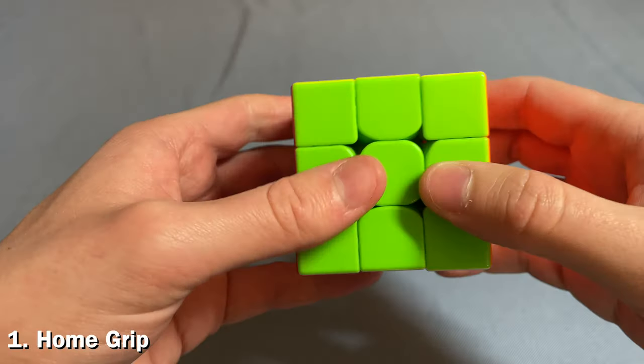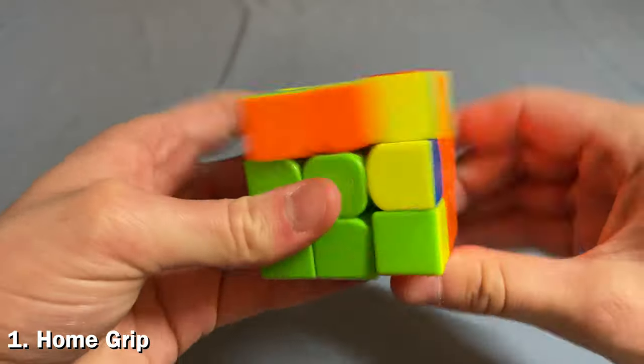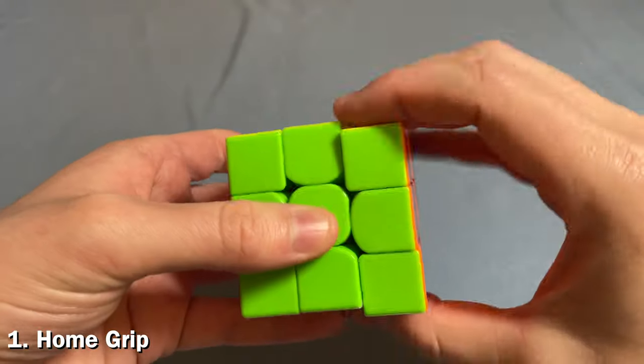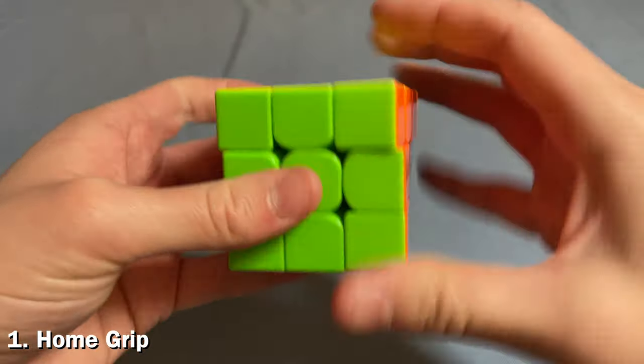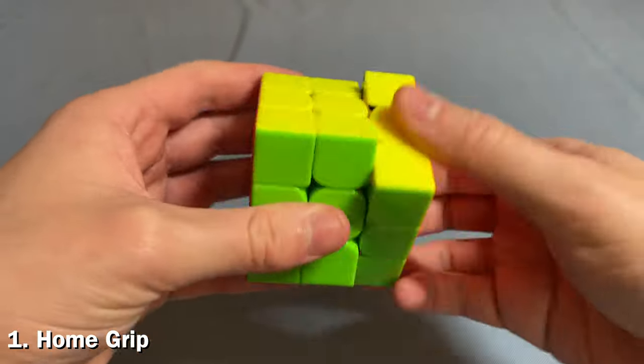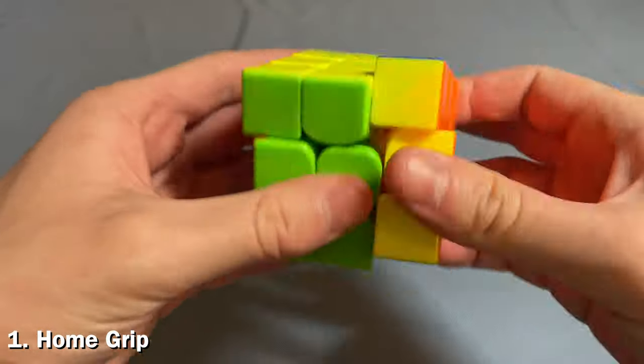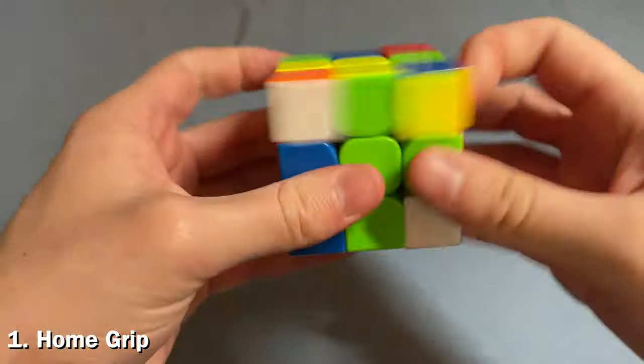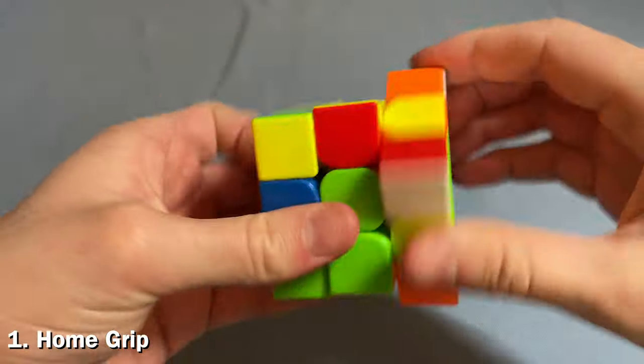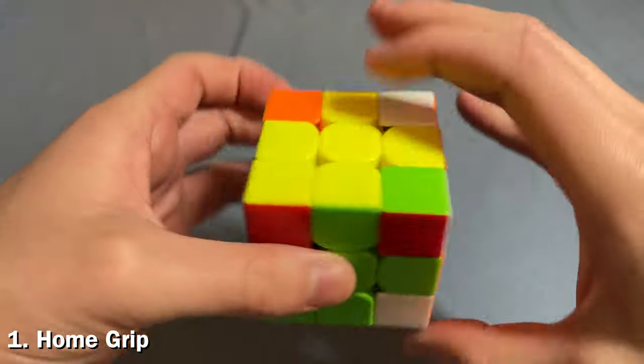Now there are times when you won't use home grip, like during some algs and triggers when you'll keep your hands on top of the cube like this. But for the most part you want to be coming back to home grip. It can be really awkward if you're trying to do something that isn't one of these algs in something other than home grip. It's just the most basic versatile grip that you should always be using.